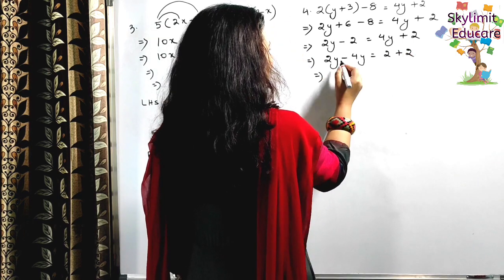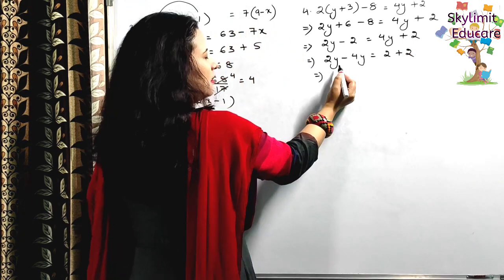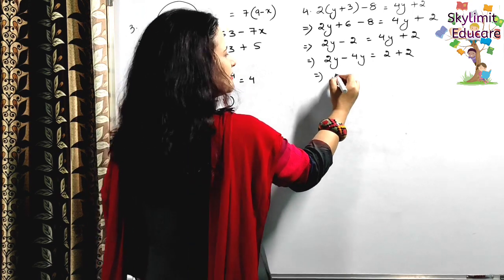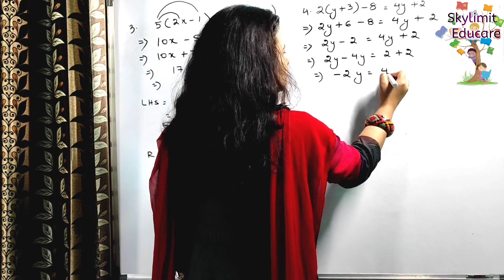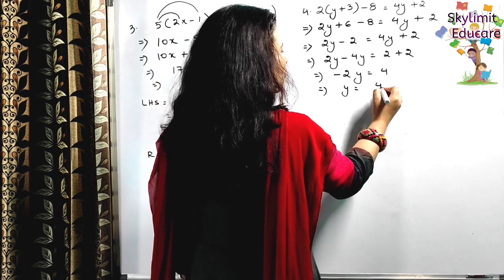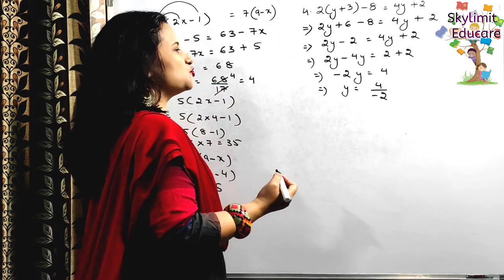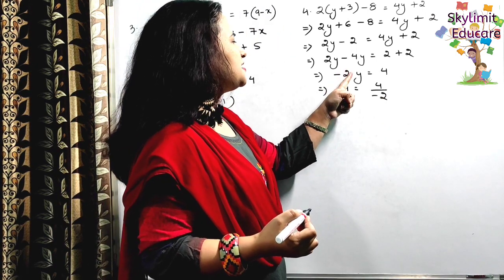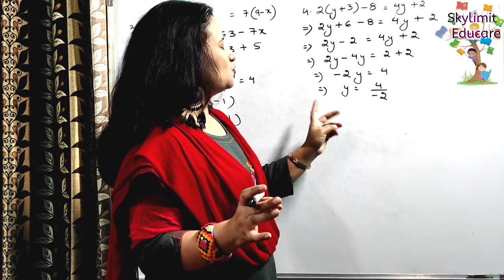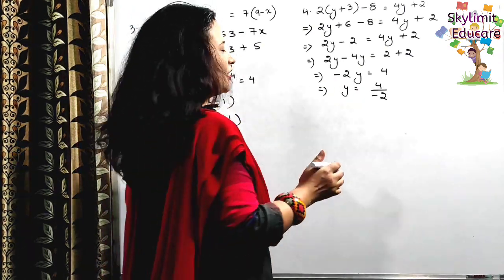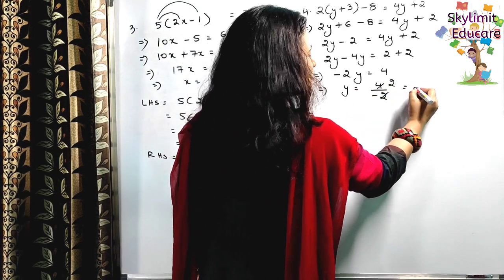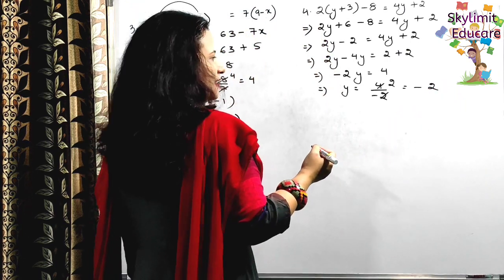On the right side, only plus 2 remains; the minus 2 from the left goes to the right and becomes plus 2. Now combining like terms: 2 - 4 = minus 2, so minus 2y = 4. Therefore y = 4 ÷ (minus 2). Don't change minus 2 to plus 2 — the multiplication sign is being converted to division, but the minus stays. When you divide a positive by a negative, the answer is always negative, so y = minus 2.